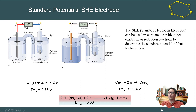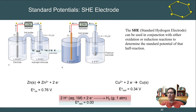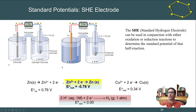Analogously, using another standard hydrogen electrode, we can measure the copper half-cell. With 1 molar copper ions and pure copper metal, we measure a standard reduction potential of 0.34 volts. Since all values in the table are reported as standard reduction potentials, we convert the zinc oxidation potential by inverting the sign, giving negative 0.76 volts as the standard reduction potential for Zn²⁺ / Zn.